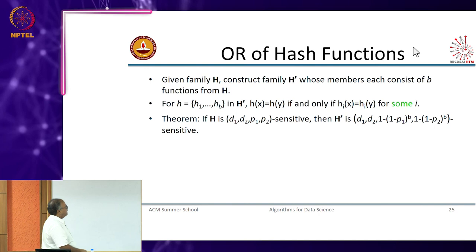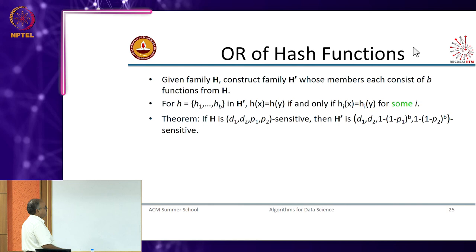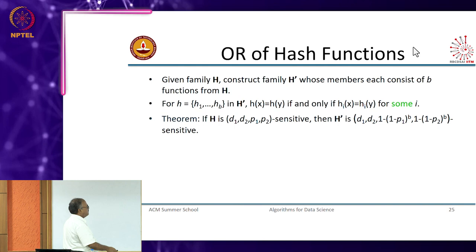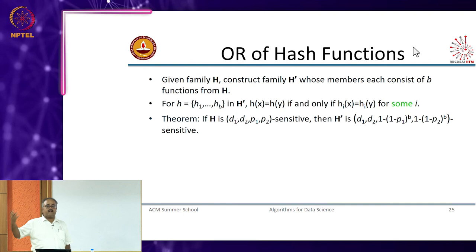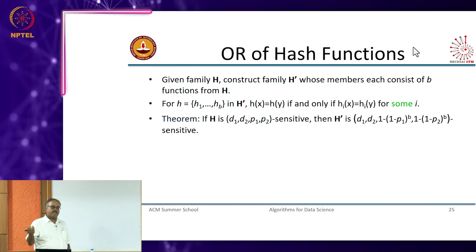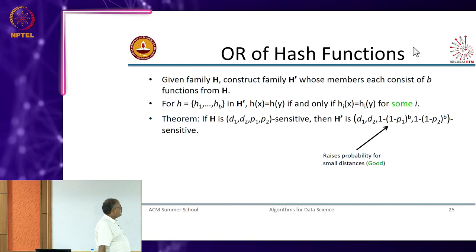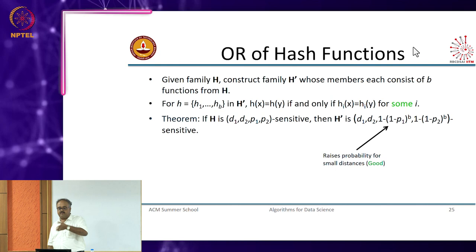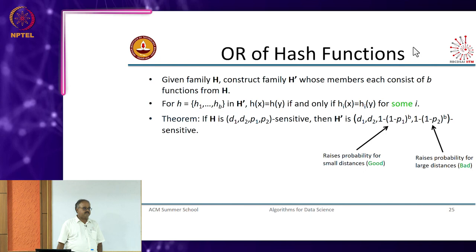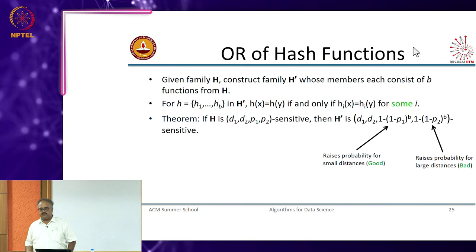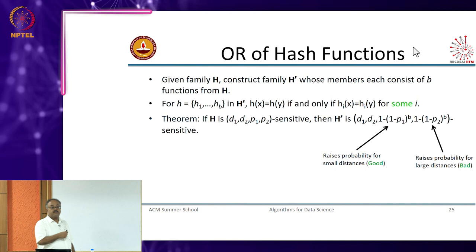If I have a d1, d2, p1, p2 family and I take members from that family and OR them — meaning for some i they agree, not for all i — then 1 minus p1 is the probability it would not agree for one hash function, 1 minus p1^b would not agree on all b hash functions, and 1 minus that is your probability of agreeing on at least one. This raises the probability for small distances. But it also raises the probability for large distances, so false positives go up, though true positives also go up.